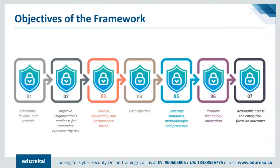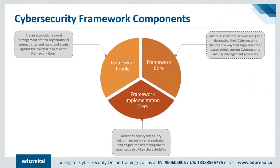The NIST Cybersecurity Framework consists of three main components: the core, implementation tiers, and profiles. The framework core provides a set of desired cybersecurity activities and outcomes using common language that is easy to understand, guiding organizations in managing cybersecurity risks in a way that complements existing processes. The framework implementation tiers assist an organization by providing context on how it views cybersecurity risk management, guiding the appropriate level of rigor and serving as a communication tool for risk appetite, mission priority, and budget. Framework profiles are an organization's unique alignment of their requirements, objectives, risk appetite, and resources against the desired outcomes of the framework core, used to identify and prioritize opportunities for improving cybersecurity.